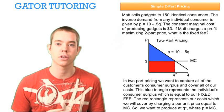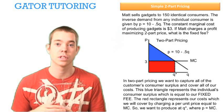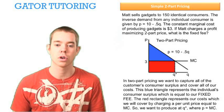So we want to produce at Q star, which is where the line price, or inverse demand, intersects or is equal to the line marginal cost.